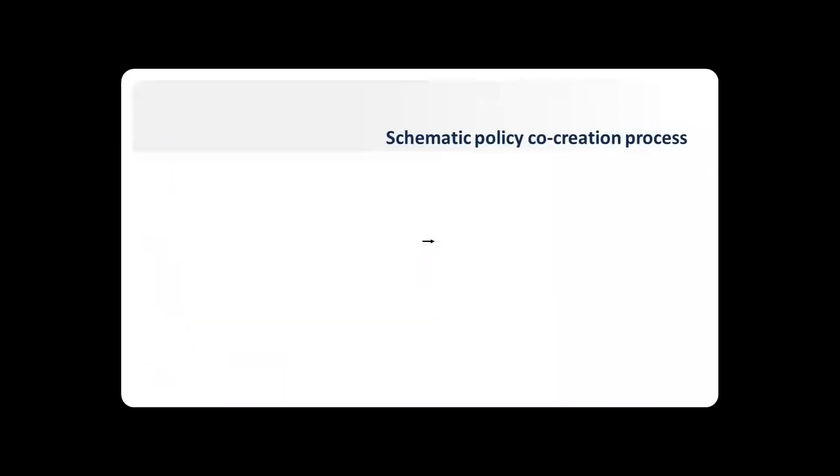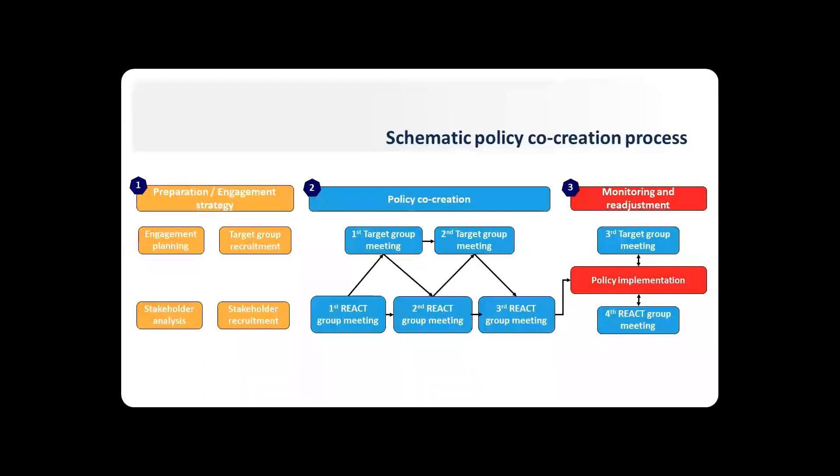And how does this process look like? We essentially have three different but connected stages. We have the preparation and the engagement strategy. We have the co-creation itself and the monitoring and readjustment. You see a lot of meetings here. This is very important for the co-creation process. You also see two different groups here because in ENPOR during the engagement strategy and stakeholder mapping, we identified a barrier that was hindering the different stakeholder groups to work effectively together. So as a risk management strategy, we allowed them to meet separately, but the meeting results were informing each other in the process.